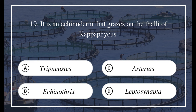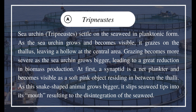Question 19: It is an echinoderm that grazes on the thallus of Kappaphycus — a) Tripneustes, b) Echinothrix, c) Asterias, d) Leptosynapta. The answer is A, Tripneustes (sea urchin). Tripneustes settles on the seaweed in planktonic form; as the sea urchin grows and becomes visible, it grazes on the thallus leaving a hollow at the central area. Grazing becomes more severe as it grows bigger, leading to a great reduction in biomass. A synaptid, initially a net plankter, appears as a soft pink object between the thalli; as it grows bigger, it slips seaweed tips into its mouth, causing disintegration of the seaweed.